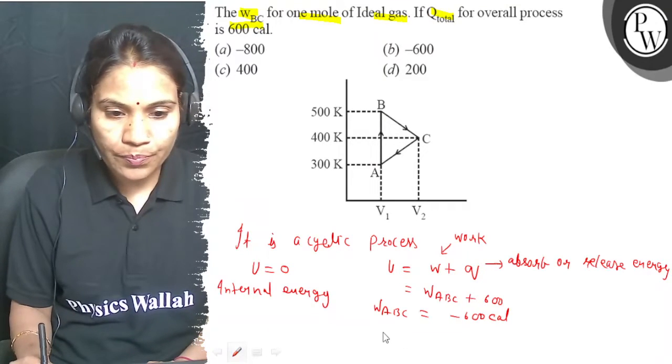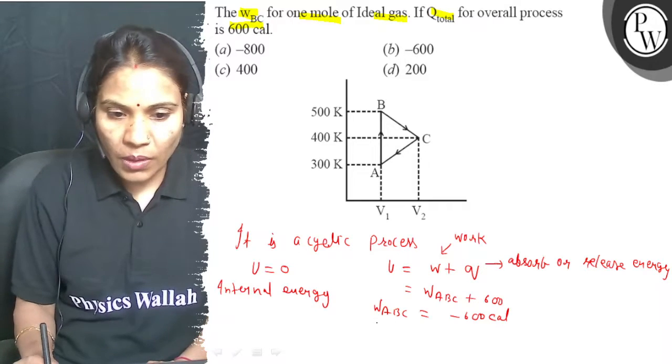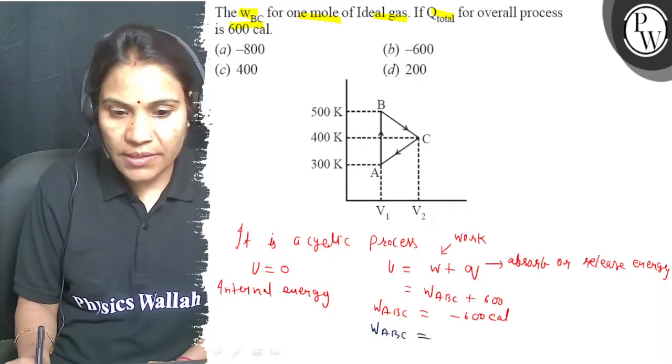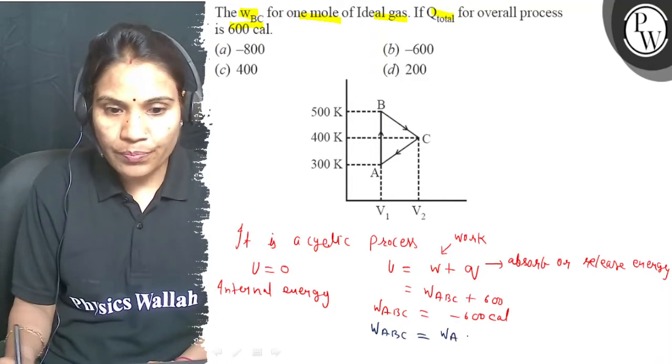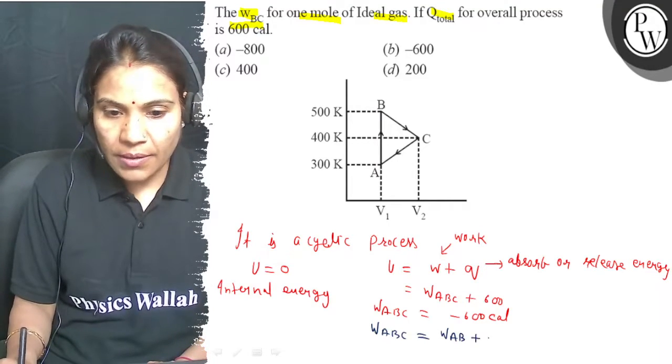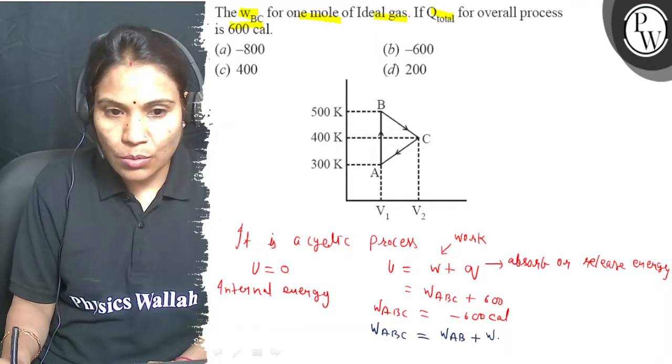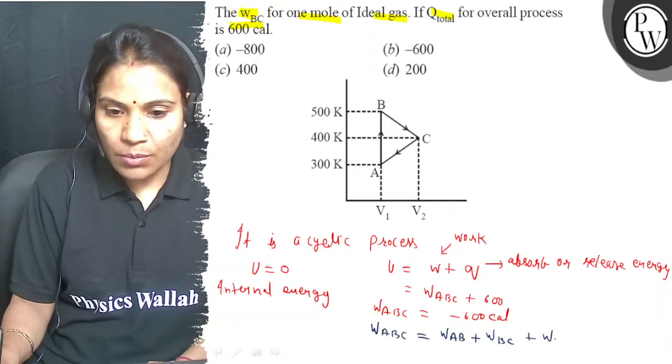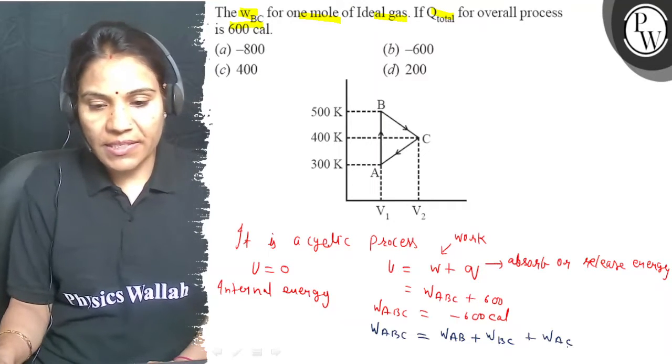And this work is equal to W ABC equals W AB plus W BC plus W AC.